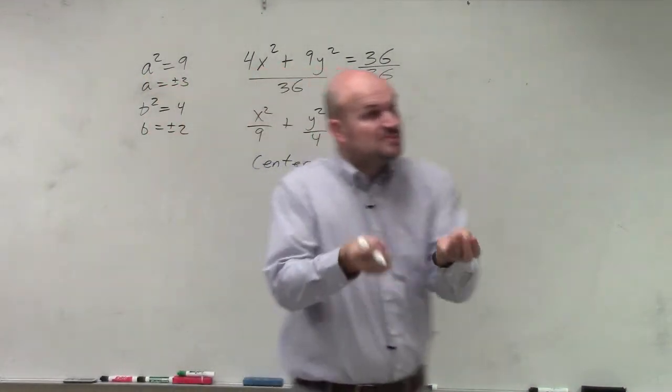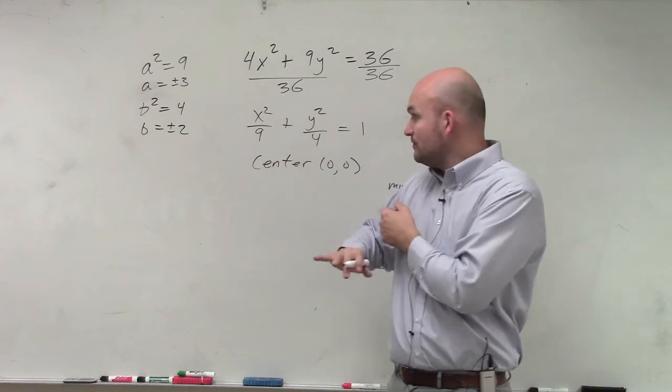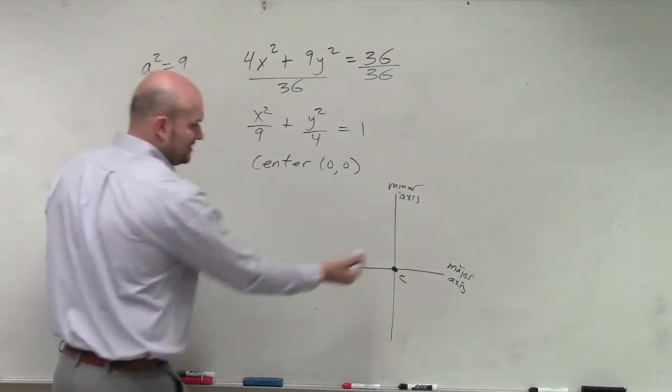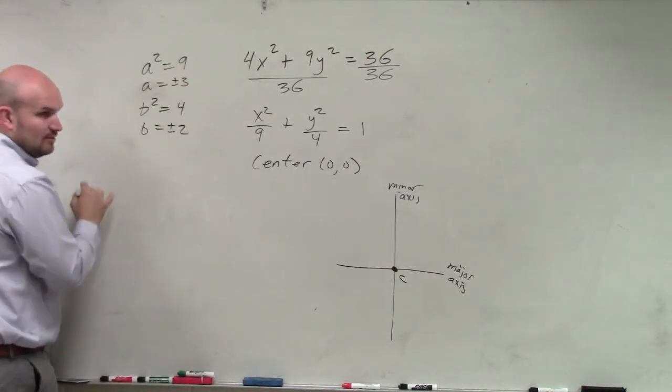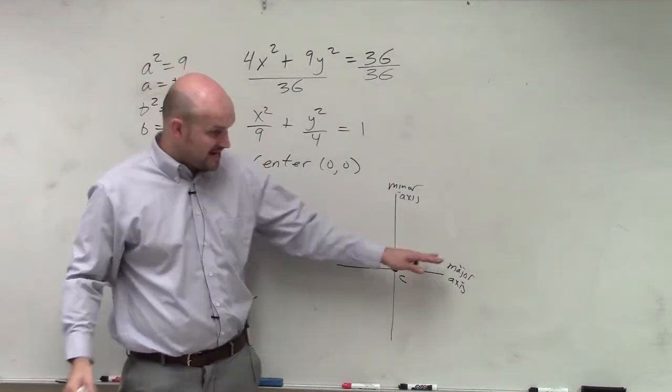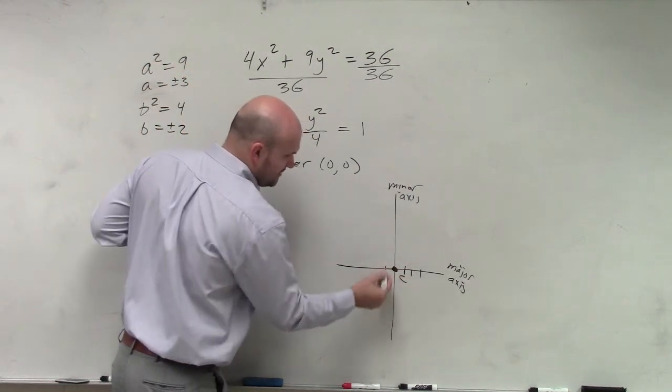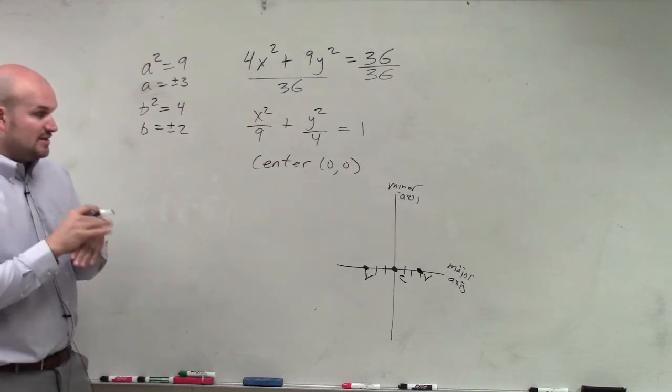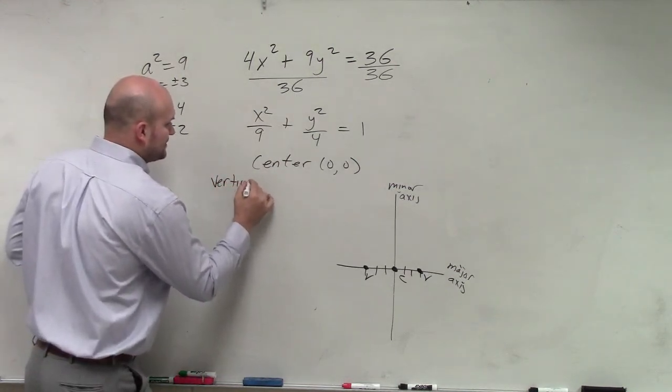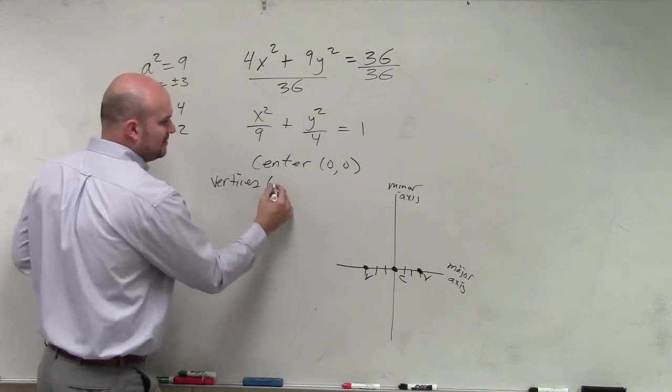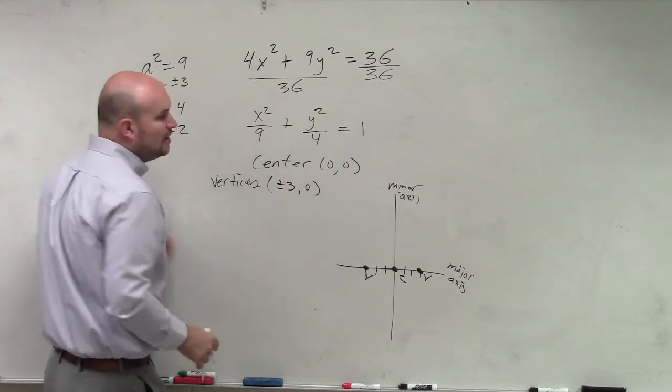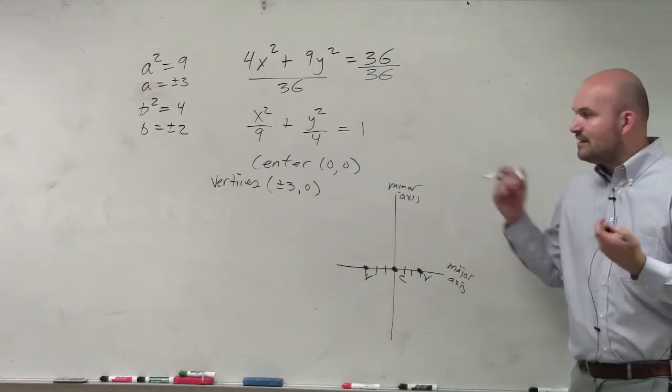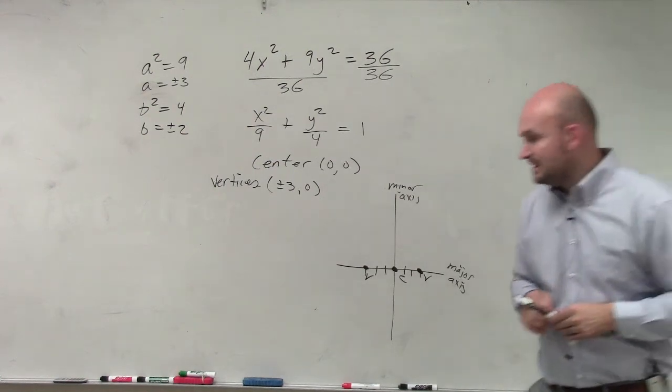This is helpful because once we know where the major axis is, if it's horizontal or vertical, now we can determine where the vertices are. Because the vertices is a distance of a. So here's my center. a is 3. Well, I'm going to go 3 on the major axis. Since the major axis is horizontal, I'm going to go over 3 and to the left 3. Those are my two vertices. Because those vertices are on the major axis. So I'll say my vertices are going to be plus or minus 3 comma 0. You can write them as (3, 0) and (-3, 0). Perfectly fine with me.